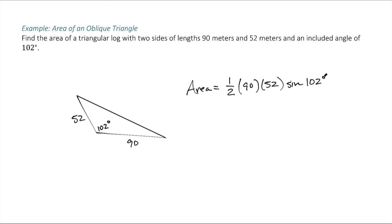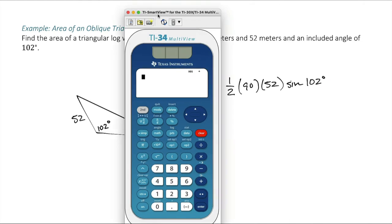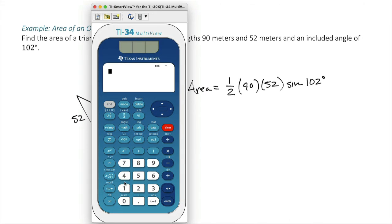sine of 102 degrees. And that's what we can plug into our calculator. So we've got one-half times 90 times 52 times sine of 102.